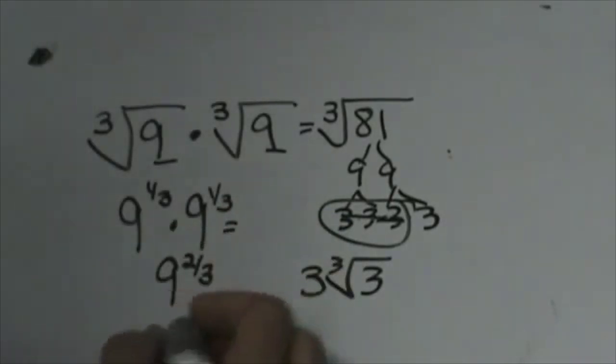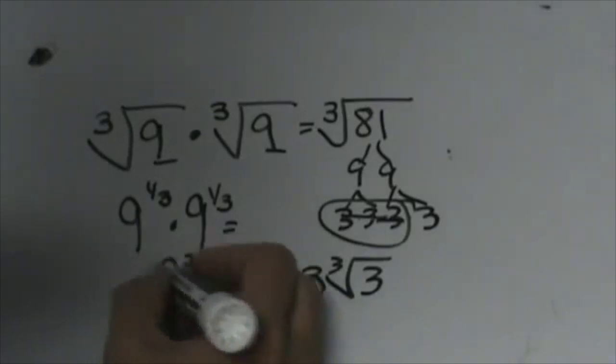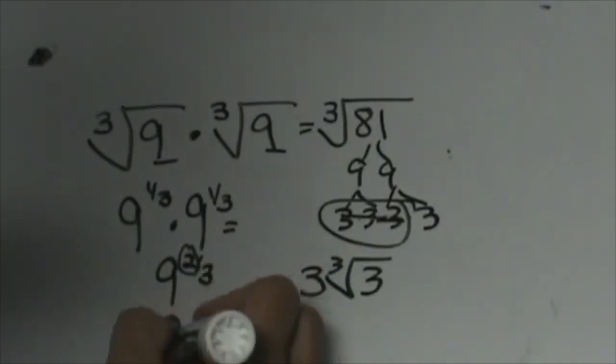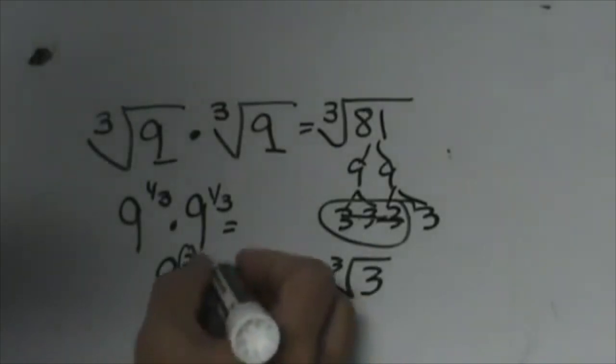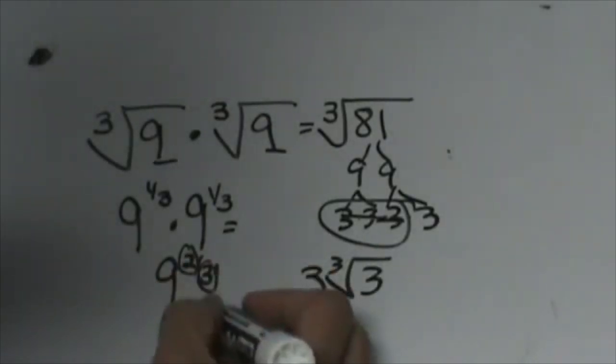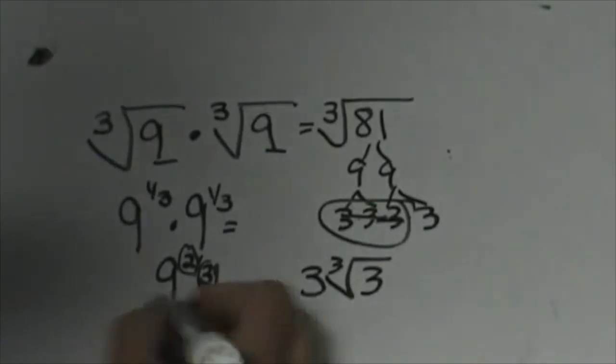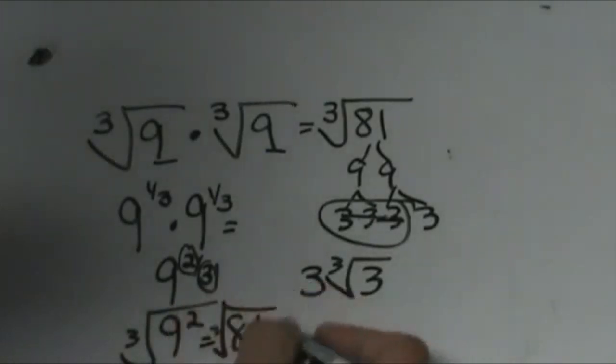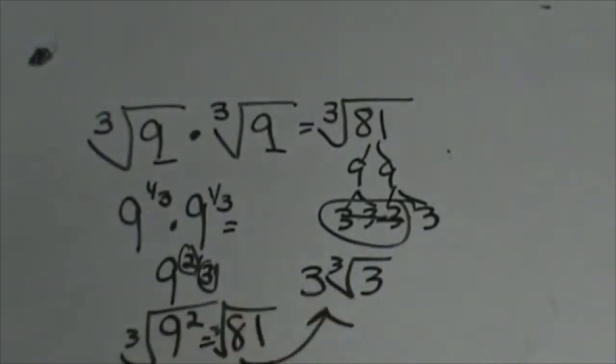Well 9 to the 2/3 is the same thing as taking 9 and squaring it. So if I take 9 and I square it I get 81. But remember this base means a cube root, so I have to take the cube root of that answer. Well the cube root of 81 is 3 cube root of 3.